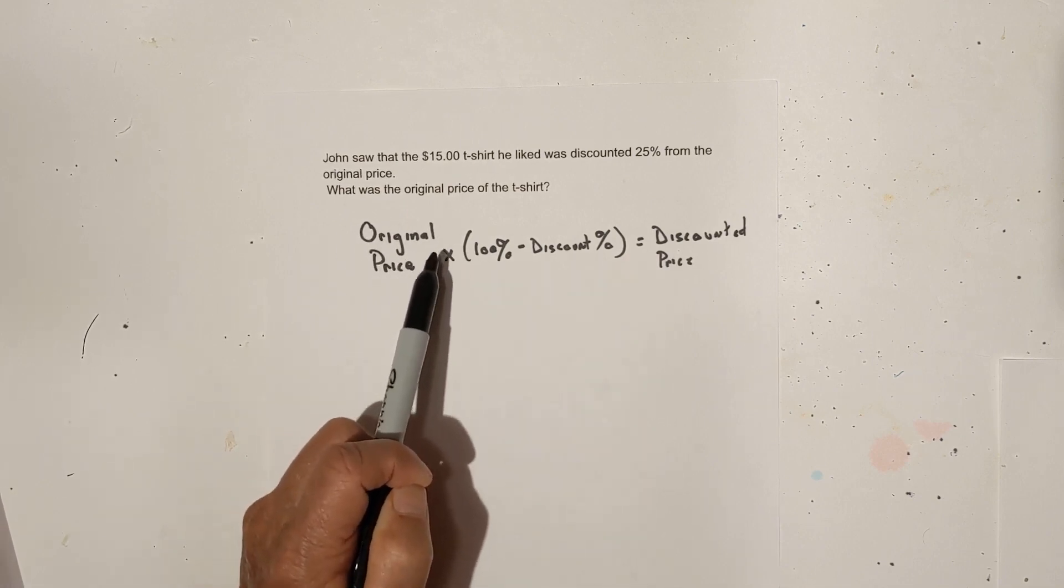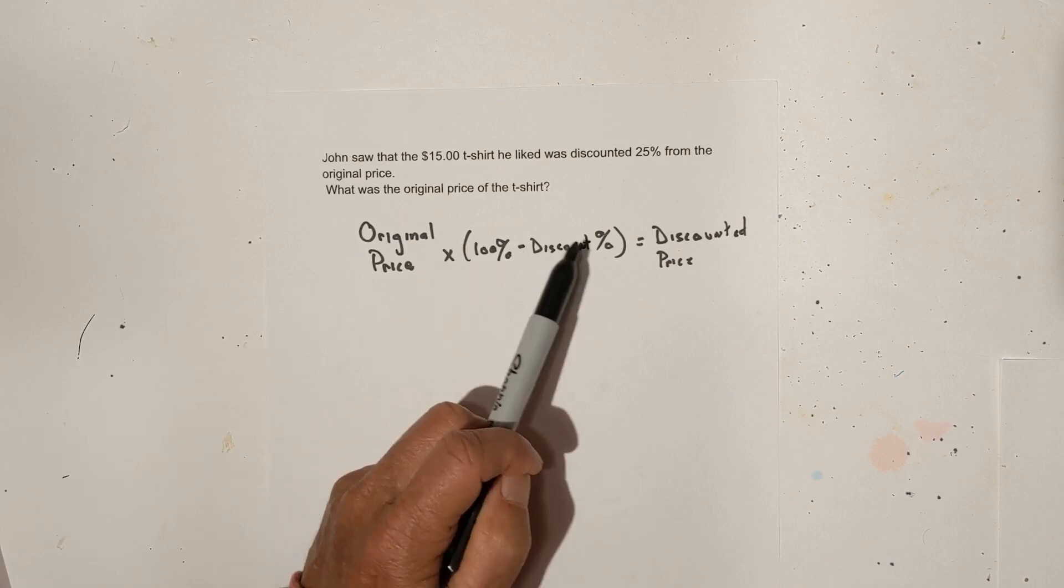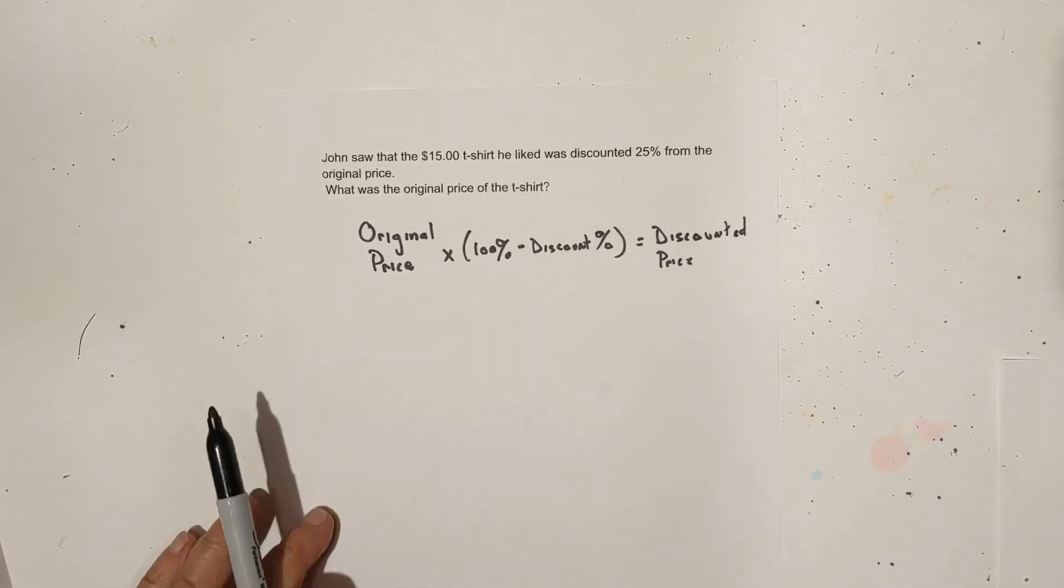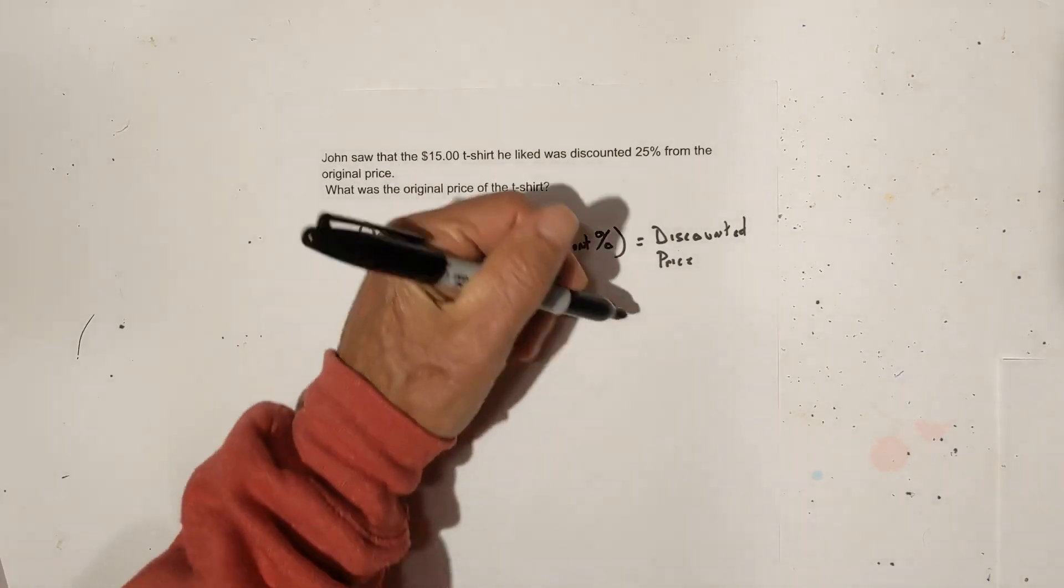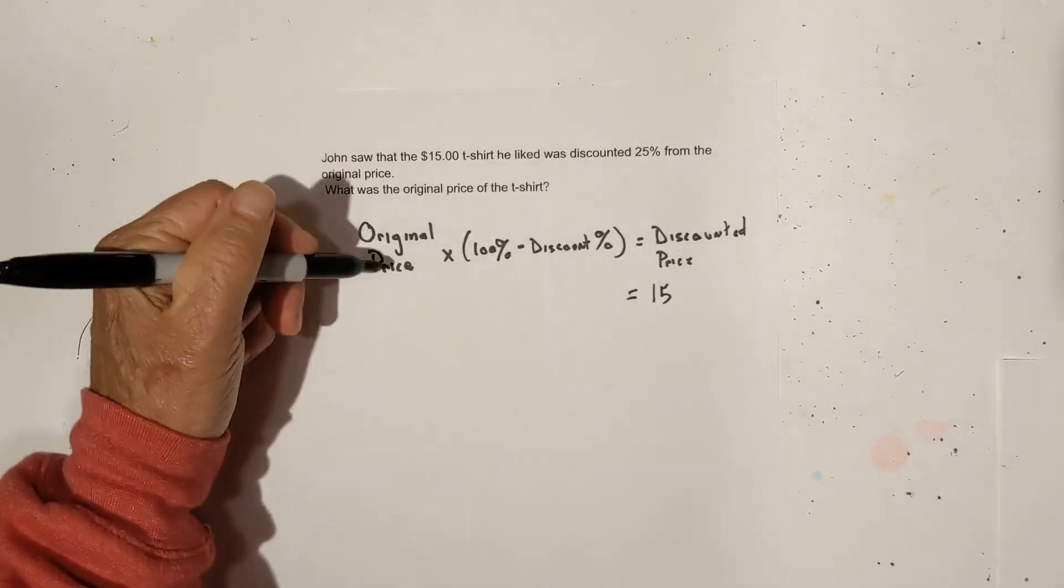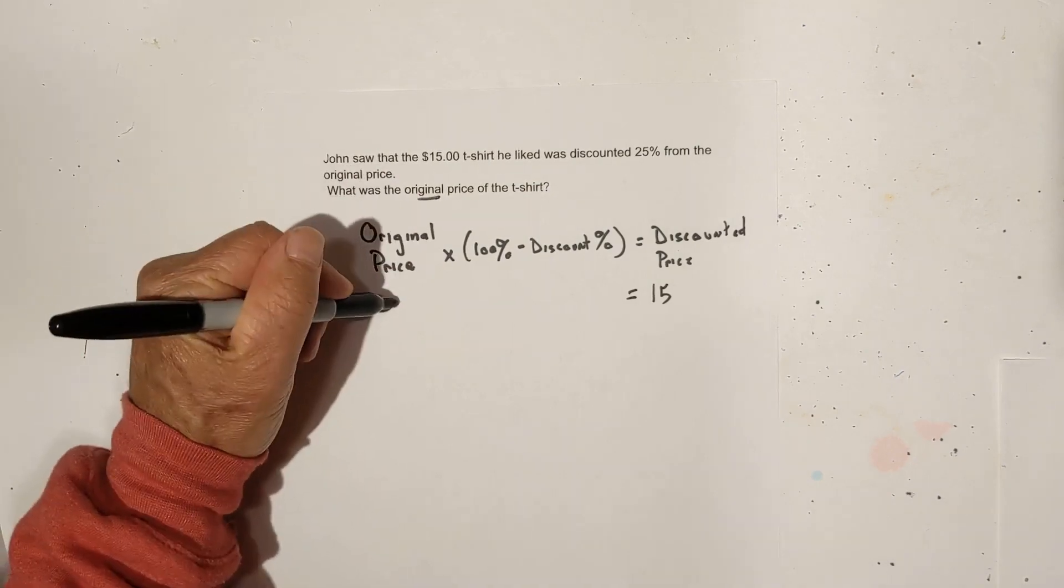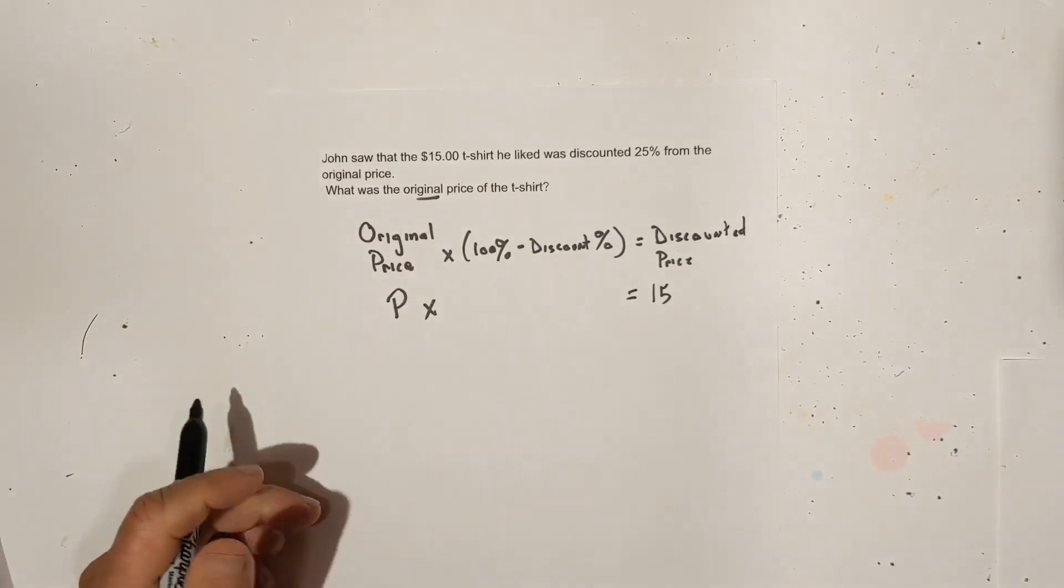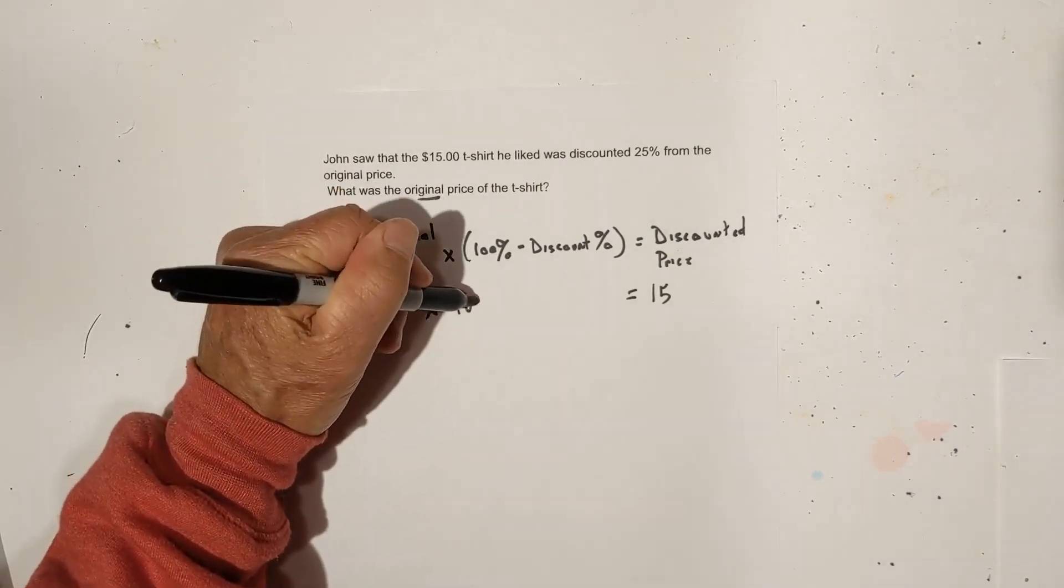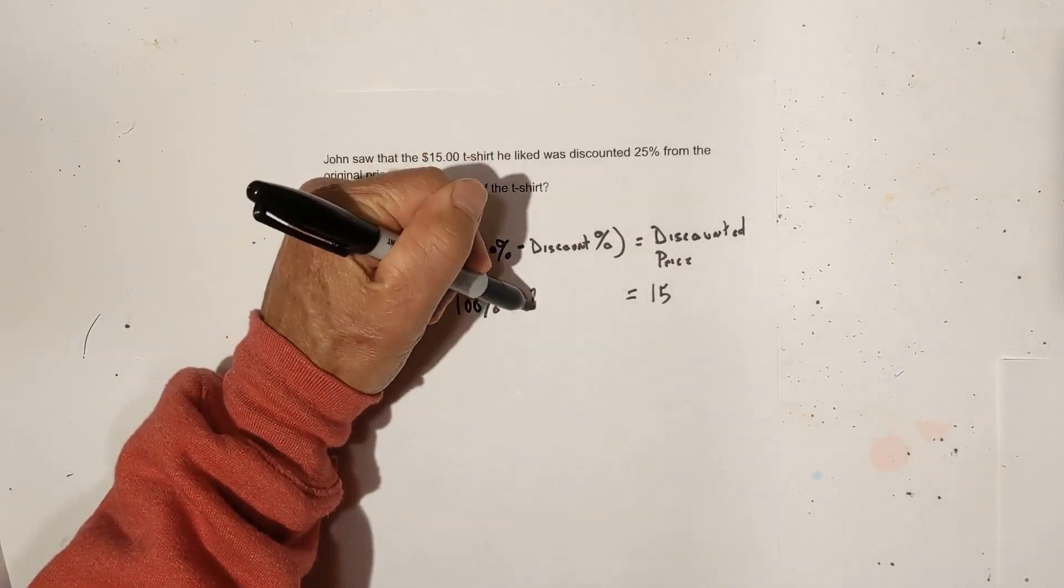Original price times 100% minus the discounted percent equals the discounted price. So let's just fill in what we know. We know that the discounted price is $15, and we're trying to find the original price. So let's put that as P.